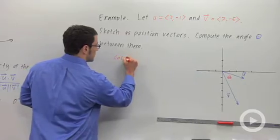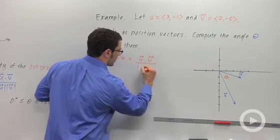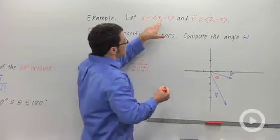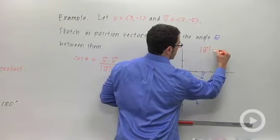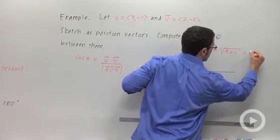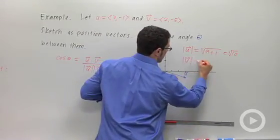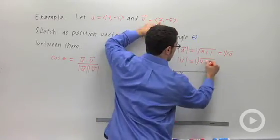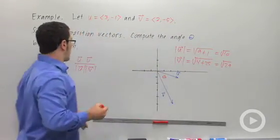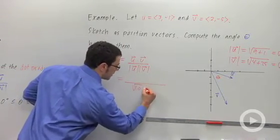Let's compute it. We use this formula: cosine theta equals the dot product of the two vectors, u dot v, over the product of their magnitudes. So I should calculate their magnitudes. The magnitude of u is the square root of 3 squared plus negative 1 squared, which is the square root of 9 plus 1, so root 10. And the magnitude of v is the square root of 2 squared, or 4, plus negative 5 squared, or 25, and that's root 29.